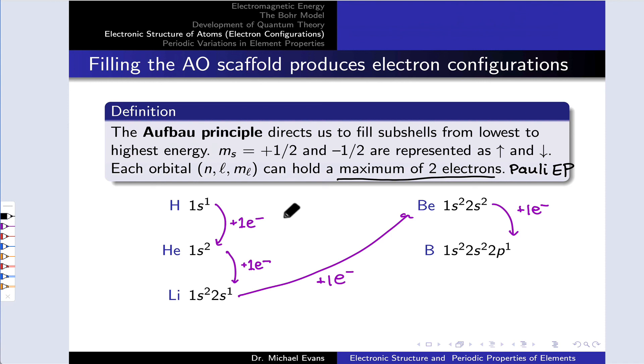So this slide shows you some examples of electron configurations for the first five elements. Hydrogen is 1S1, we add an electron, we get to 1S2, that subshell is full. For lithium, 1S2, 2S1, beryllium, 1S2, 2S2, and for boron, now the 2S subshell is full, and we have to add an electron to the 2P subshell to get to 2P1.